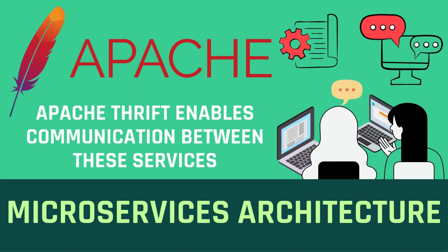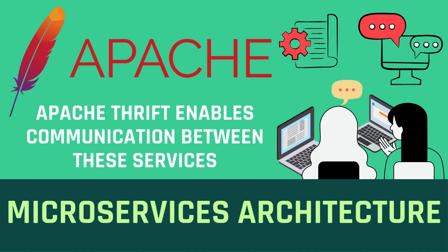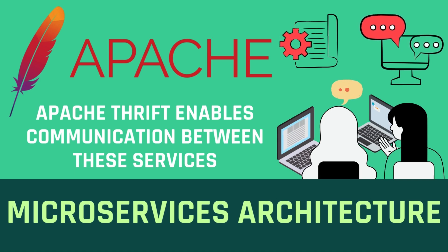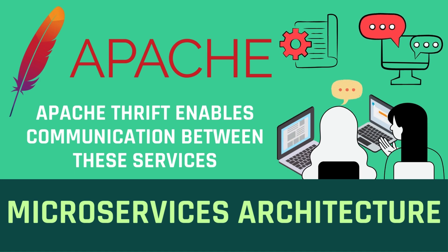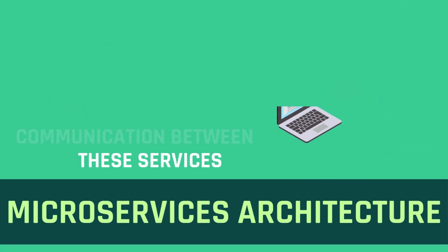Facebook employs a microservices architecture in which services are written in different programming languages. Thrift is used to facilitate communication between them, ensuring each service can operate independently while collaborating effectively. It's like a well-coordinated team with each member playing their unique role to keep Facebook running smoothly.